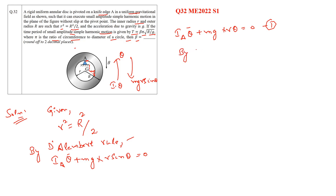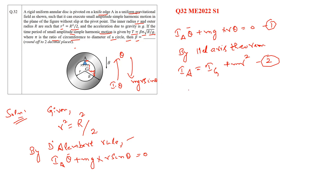Now we apply the parallel axis theorem, which states that the moment of inertia at point A equals the moment of inertia at the center of gravity G plus m·r². To calculate I_G, we consider an area element dA along the annular disc, so dA = 2π·x·dx.